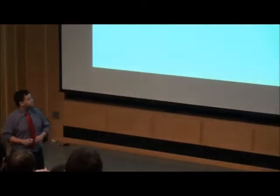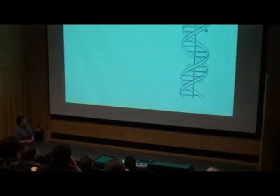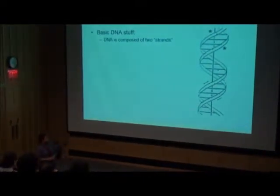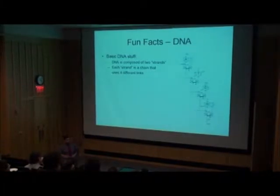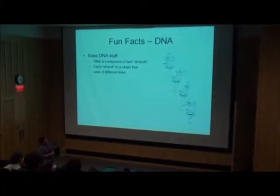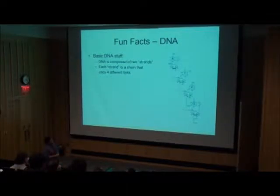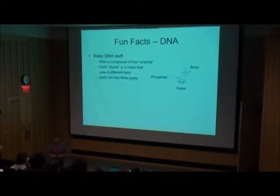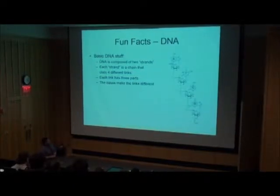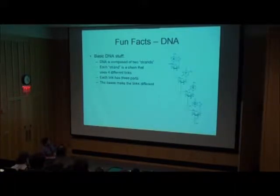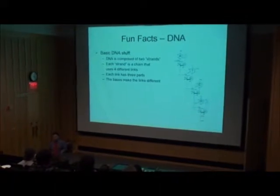Some basic stuff about DNA: it's composed of two strands. This is the famous figure from Watson and Crick's publication in Nature, showing the two strands. Each strand is a chain that uses four different links — A's, T's, C's, and G's. Each link is composed of three parts: phosphate, sugar, and a base. What makes each link different is the identity of the base bound to the sugar. DNA on each strand is composed of a sugar-phosphate backbone, with bases sticking out in different combinations — that's essentially what codes for life.